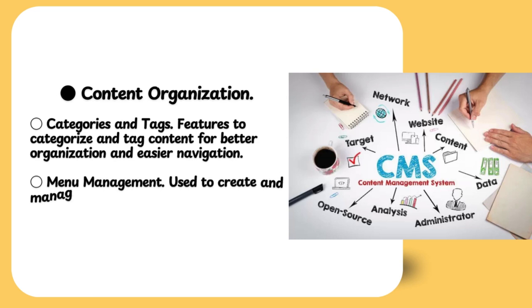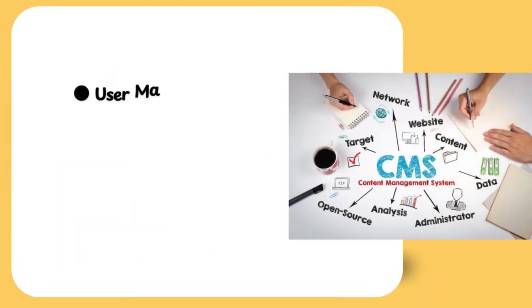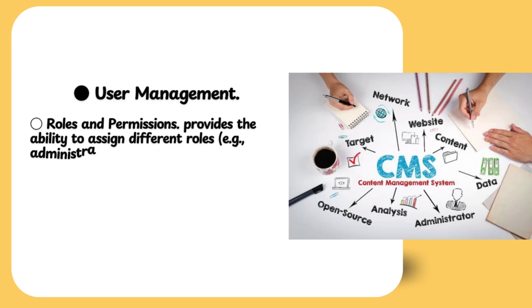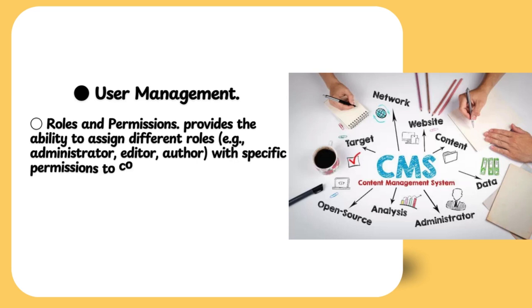Content organization: categories and tags are features used to categorize and tag content for better organization and easier navigation. Menu management is used to create and manage navigation menus for the website. User management: roles and permissions provide the ability to assign different roles.